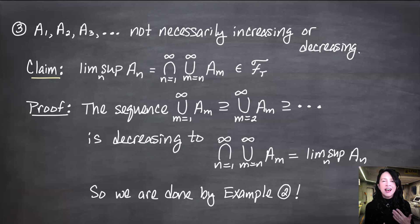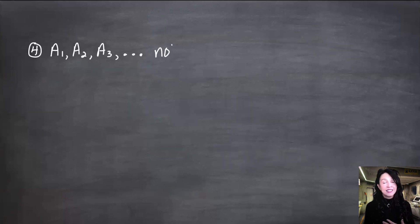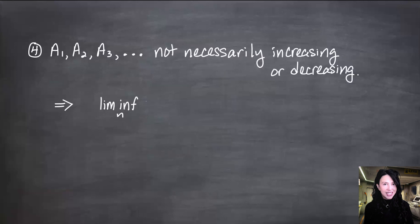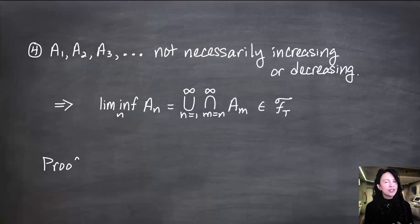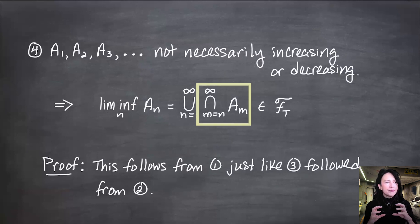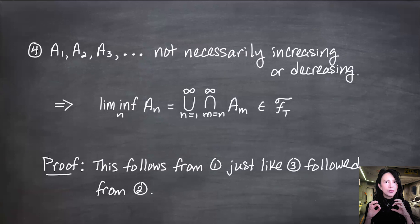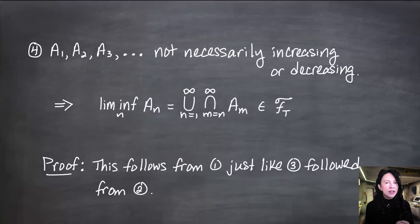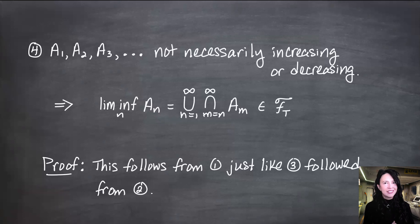You know what's coming next — the lim inf. I'm also going to leave this one for you. This is going to be a very similar process to what we just did. I claim for any arbitrary sequence of sets in the sigma field, the lim inf is in the tail sigma field. All you need to do is write down the definition of the lim inf and focus on the intersections within the unions. As we increase the index, we're getting smaller and smaller — you're looking at a union of a decreasing sequence of sets. We know that result is in the tail sigma field if you prove example 2.